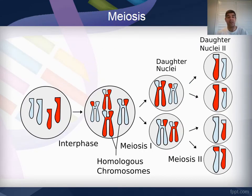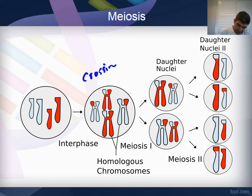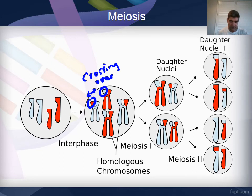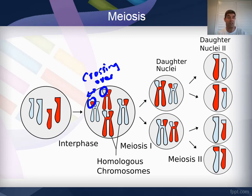Here is another schematic showing the same process, complicated by another process called crossing over. Crossing over occurs where parts of chromosomes actually exchange material — this is a source of variation that we won't go into today, but this diagram shows a nice simplified overview. Like mitosis, meiosis has a number of stages with names associated with each, but we want to just get a general overview at this point of how the process works.